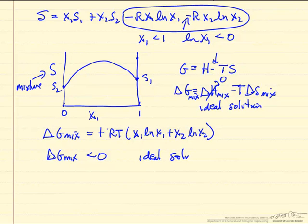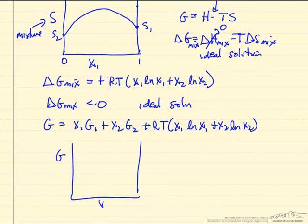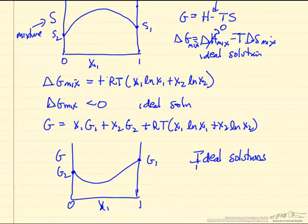Now this says delta G of mixing is less than 0. Again, looking at an ideal solution. So we're saying the Gibbs free energy for the mixture is x1 G1 plus x2 G2, the pure component values, plus RT x1 ln x1 plus x2 ln x2. And so the Gibbs free energy goes through a minimum when we mix. And so we will plot Gibbs free energy versus x1 from 0 to 1, G2, G1, then we're going to see a minimum. And so just emphasize all of these values that we're looking at are ideal solutions, which means they also apply for mixtures of ideal gases.